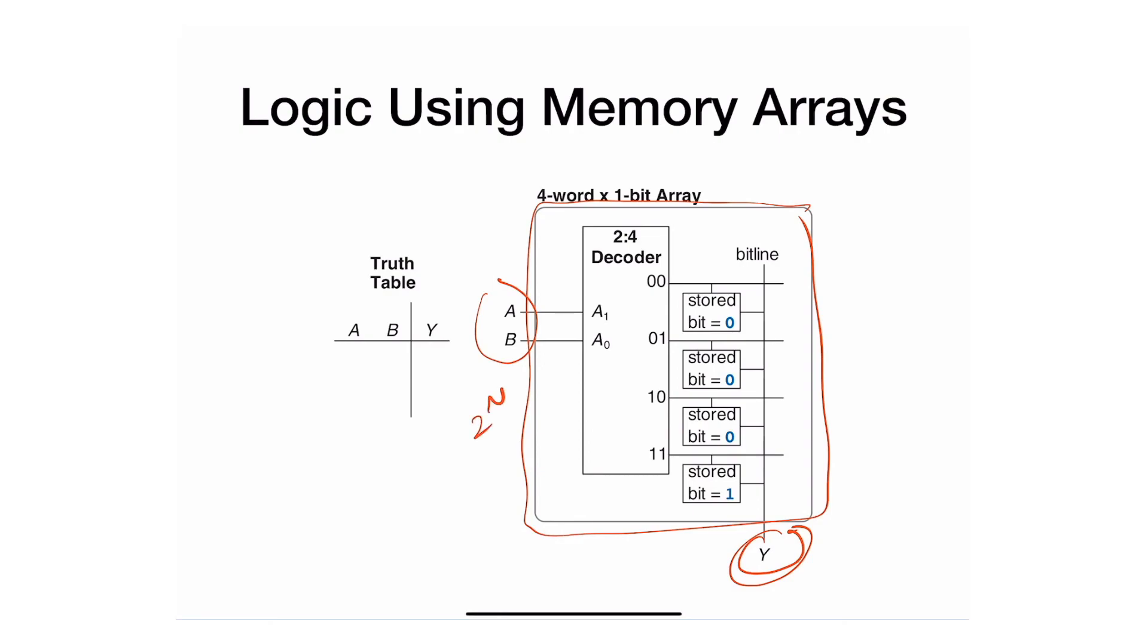Using logic arrays might save you time if you have very large arrays. Generally speaking, when you implement combinational logic using memory like this, the table we get is what we call a lookup table—because you're actually looking in a table for the output Y, as opposed to implementing it using logic gates.